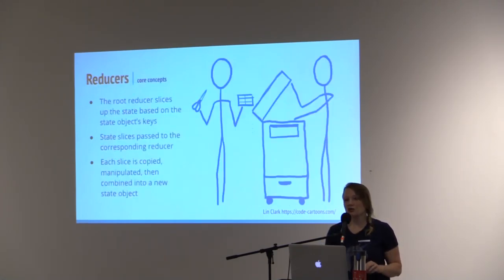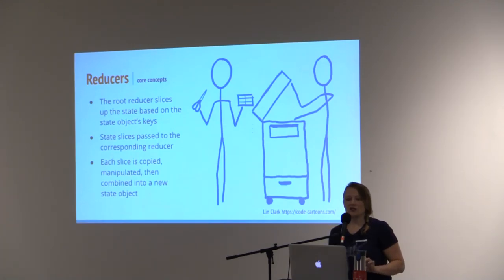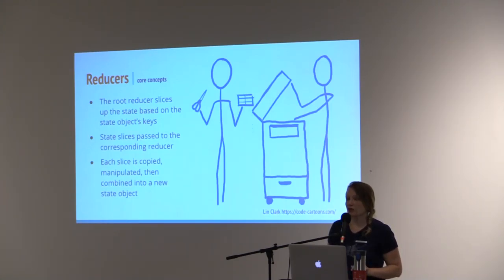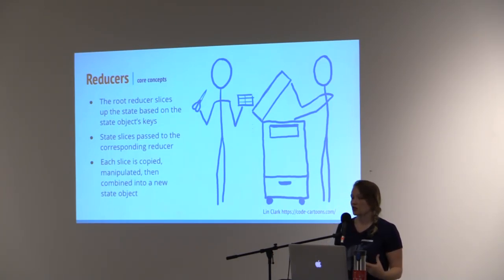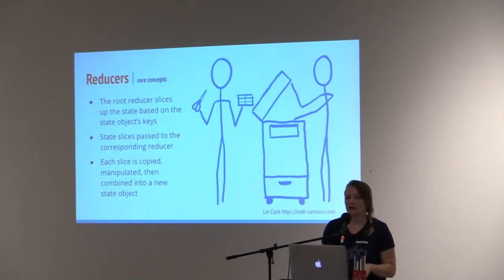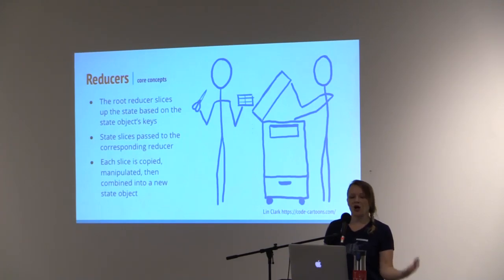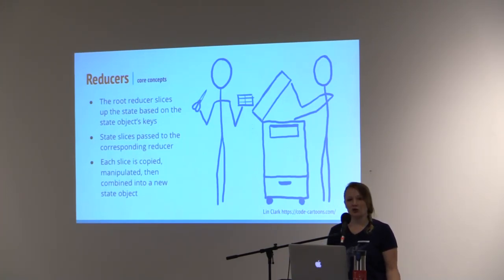The reducers are where the real work happens in Redux. When the store needs to know how an action changes the state, it asks the reducers. The root reducer takes charge and slices up the state based on the state object's keys. It passes each slice of state to the reducer that knows how to handle it. Each slice is copied, manipulated, and then all of the slices are combined into a state object in the root reducer.